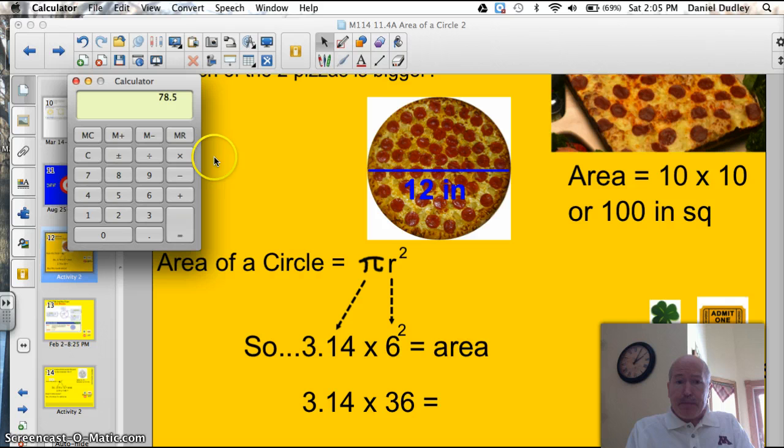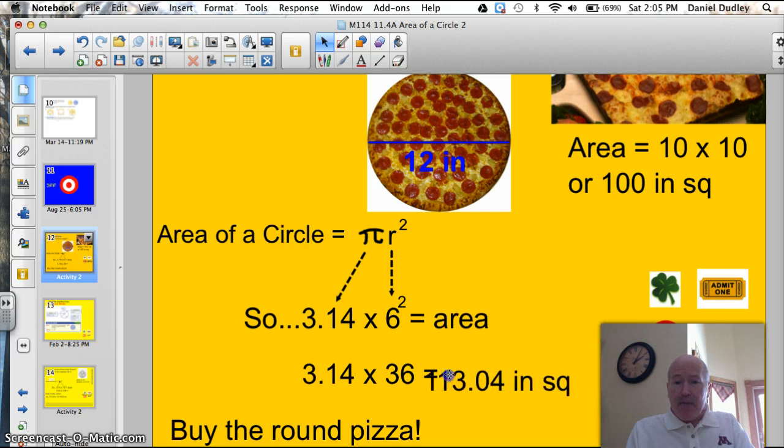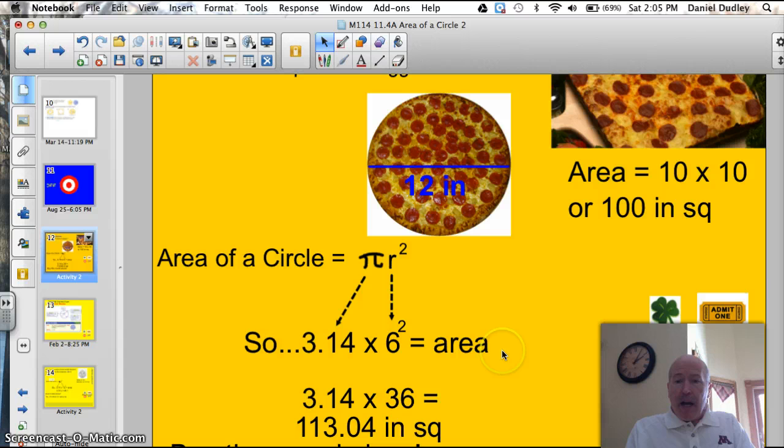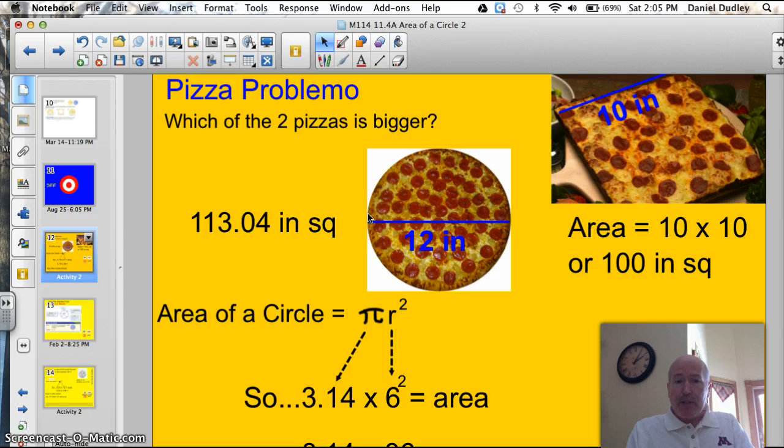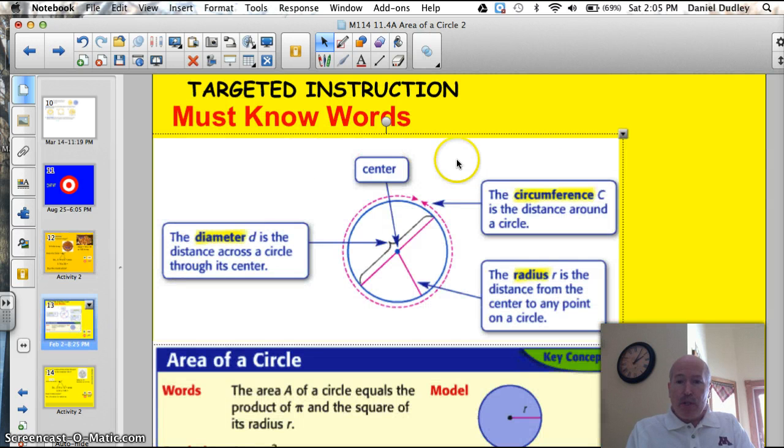Let me grab my calculator. 3.14 times 36 equals 113.04 inches squared. Now I've got 100 square inches of pizza in the square one, and the round one is actually 113 inches squared. Which is the bigger pizza? Well, of course, the round one is. You get about 13 inches more pizza. Buy the round pizza. So that's what we're going to be focused on doing tonight. It's a pretty simple, straightforward target.